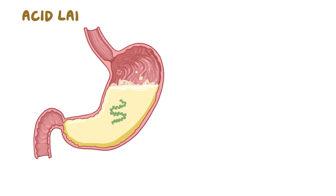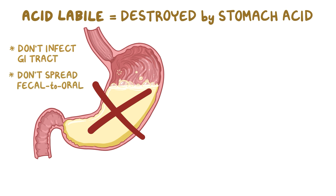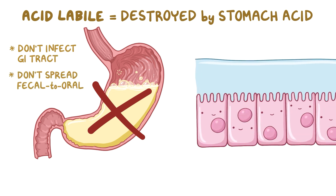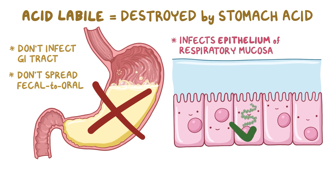Unlike other picornaviruses, rhinoviruses are acid labile. That means they can be destroyed by stomach acid, so they don't typically infect the GI tract and don't spread through a fecal-to-oral route. On the other hand, rhinoviruses do commonly infect the epithelium of the respiratory mucosa, which lines the nasal cavity.